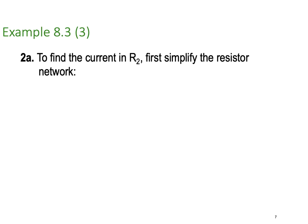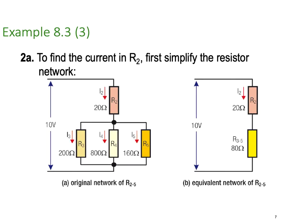Step 2a, to find the current in the resistor, first simplify the resistor network. We're moving on to the second part and we've got to simplify the resistor network. We're going to find I2, we're going to have to simplify R3, R4 and R5. They're all in parallel, of course, so 1 on 200 plus 1 on 800 plus 1 on 160, and invert that back and you'll get 80 Ohms.